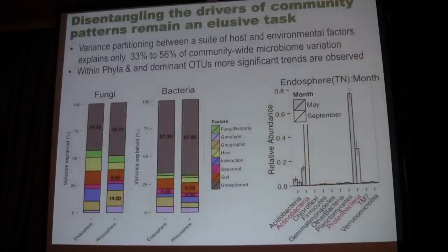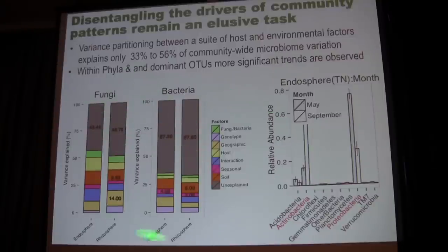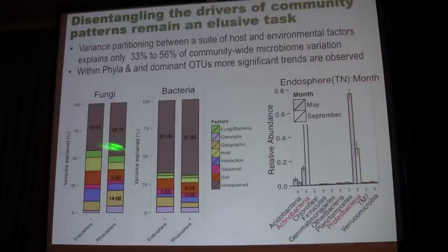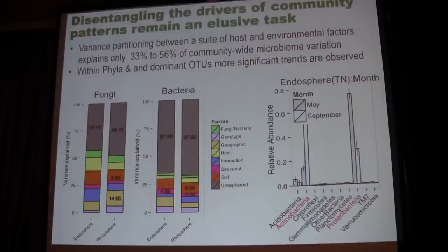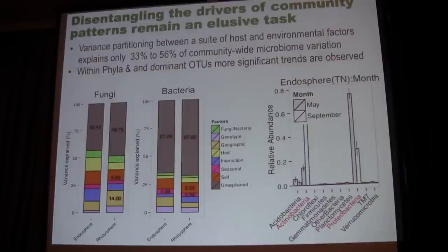We tried to account for all the variation in the systems and partition that variation according to different categories that we measured. We looked at both fungi and bacteria. Within the fungi, we could account for about 63% of the variation in the rhizosphere microbiome and about 56% in the endosphere microbiome using our measured variables. For bacteria, we did less well. But within certain phyla, we see highly significant interactions with individual variables or time period of sampling.